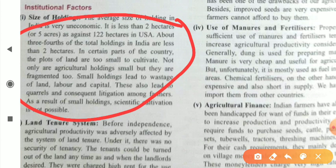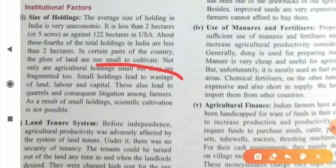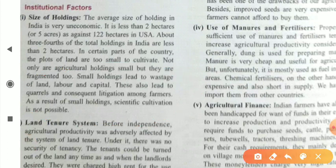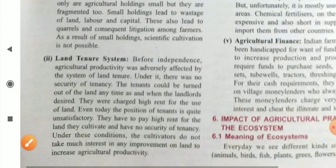Small holdings also lead to quarrels and consequent litigation among farmers. As a result of small holdings, scientific cultivation is not possible. This is the first institutional factor affecting agriculture productivity.